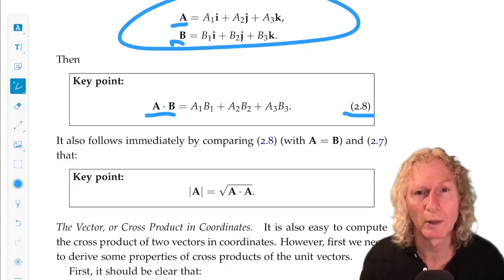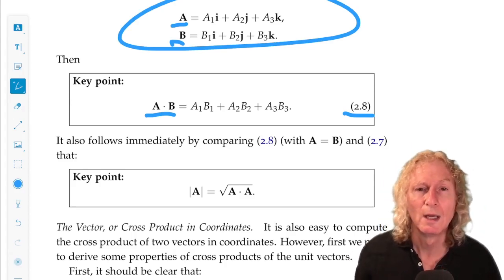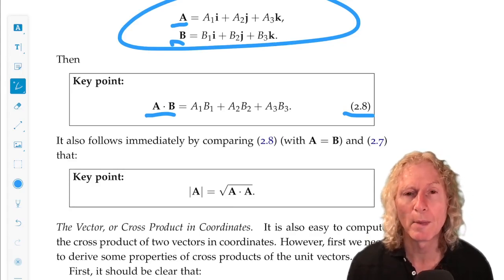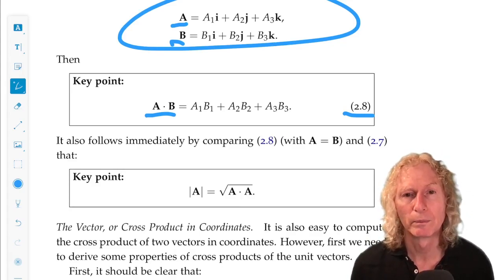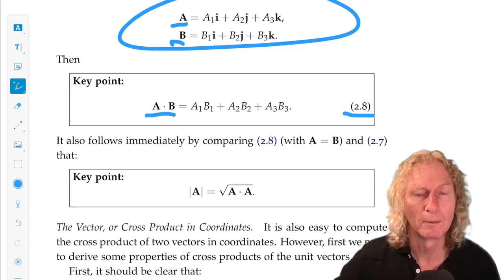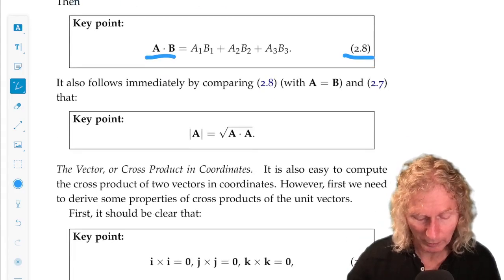So A dot A is A1 squared plus A2 squared plus A3 squared. That's the square root of the magnitude. So we can express the magnitude of a vector in terms of the dot product in this way. And that's going to be very useful.